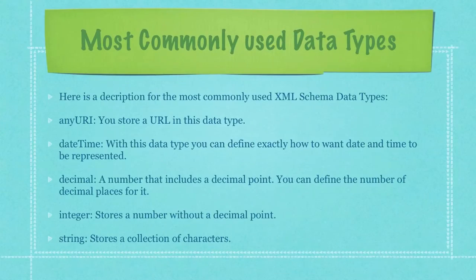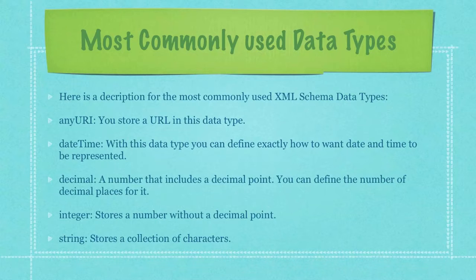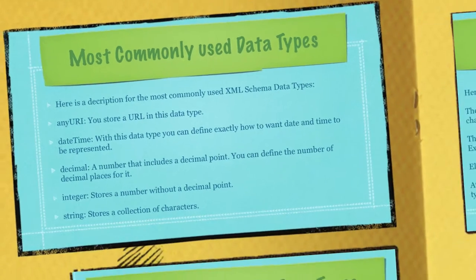Here is a description for the most commonly used XML schema data types. AnyURI: you store a URL in this data type. DateTime: you can define exactly how you want date and time to be represented. Decimal: a number that includes a decimal point — you can define the number of decimal places. Integer: stores a number without a decimal point. String: stores a collection of characters.